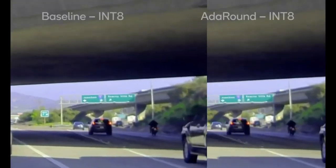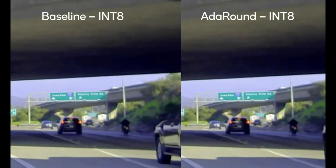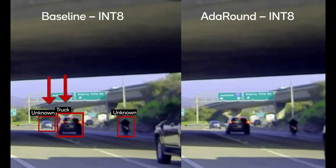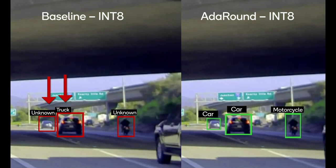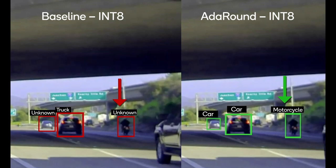Similarly, the first method misidentifies two cars as unknown and truck. With AdAround, vehicles are labeled correctly and the bounding boxes match the ground truth more closely. The same goes for this motorcycle, which is not identified in the baseline model, but correctly identified with AdAround.